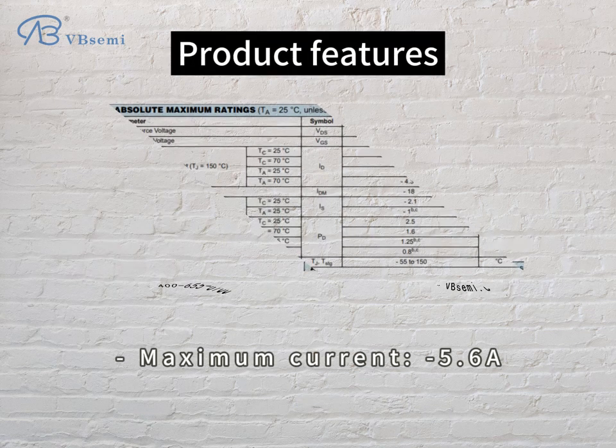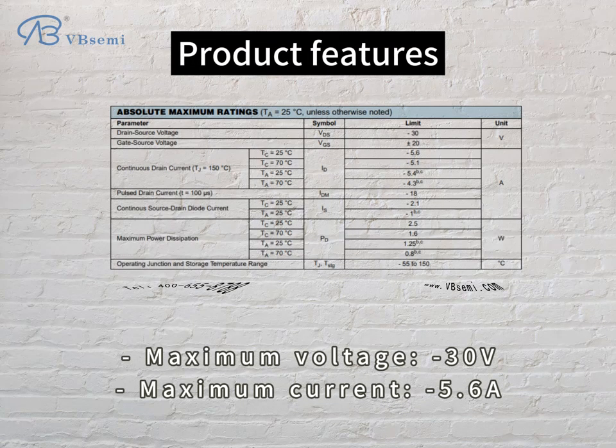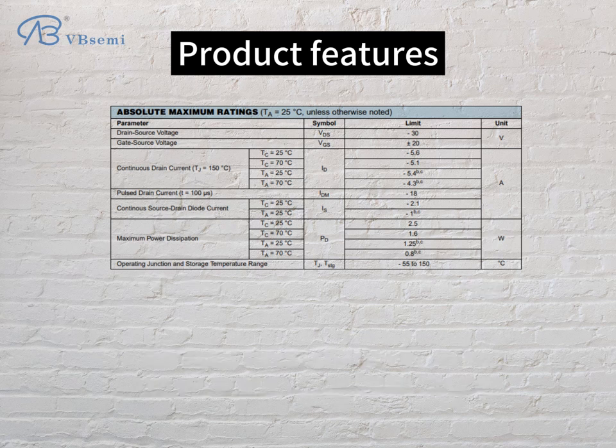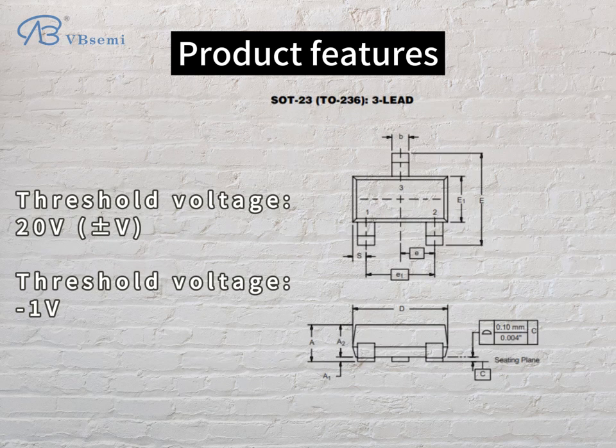Product features: maximum voltage -30V, maximum current 5.6A. Threshold voltage range: -2V to -1V.